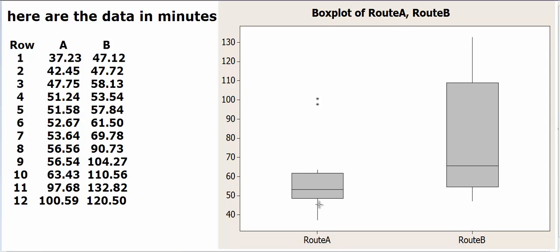So here we have the data in minutes on 12 randomly selected samples for the routes A and route B for the driving times. Here we have route A, here we have route B. And of course you can see that here we have lower values, but this has two strong outliers. And sample sizes are 12, which is not really very large. So we would be a little reluctant to use the two sample t-test.